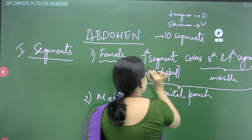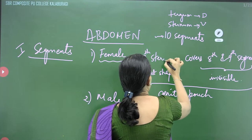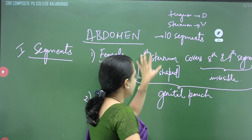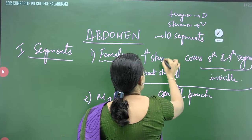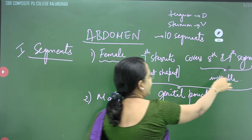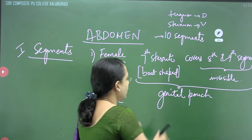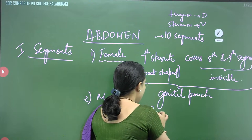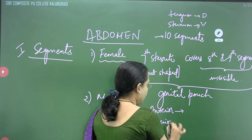So, the 7th sternum — also called the 7th sternite — covers the 8th and 9th segments. As a result, the 8th and 9th sterna are not visible, whereas the 7th is visible. Only the 7th sternite is visible in the female. It forms a genital pouch. In front of the genital pouch there are some important openings, and that region is called the anterior genital pouch; another region is the posterior genital pouch.